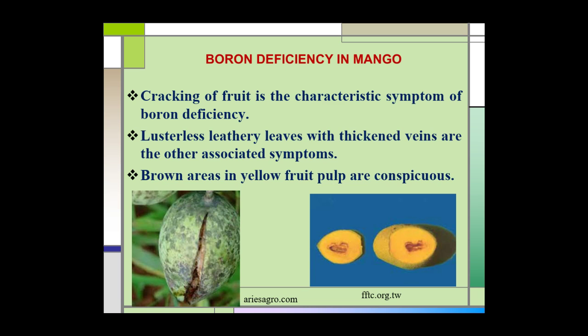Boron deficiency in mango. One of the characteristic symptoms of boron deficiency in mango is the cracking of the fruits. The leaves become lusterless and leathery, with thickened veins as other associated symptoms. Brown areas in the yellow fruit pulp are also deficiency symptoms of boron.